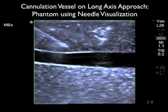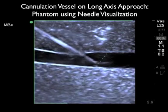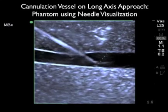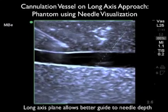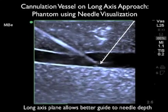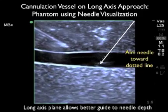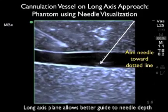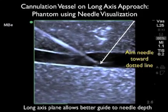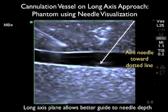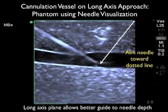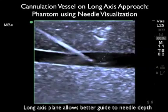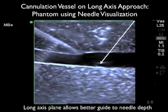In this video clip we'll use the long axis approach for cannulation of a central vein, using MBE technology available on many SonoSite machines which makes the tip of the needle much more echogenic. We aim the needle towards the dotted line on the image. Watching the needle come in from left to right, we can see the full extent of the needle as it travels from superficial down to permeate the anterior wall of the vessel and enter the lumen. The long axis plane allows a much better guide to needle depth, letting you gauge where the tip of the needle is at all times. I generally start with a short axis approach and then flip to long axis.